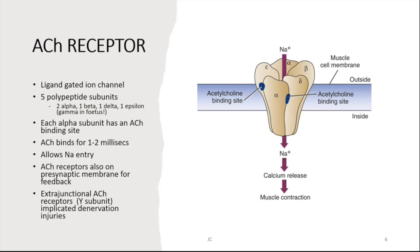Acetylcholine receptors are not just limited to the post-synaptic membrane; they are also present on the pre-synaptic membrane and serve as feedback — high acetylcholine binding there reduces vesicle mobilization and release. There are also extrajunctional acetylcholine receptors, which contain the gamma subunit similar to the fetal receptor. These are implicated in de-innervation injuries: in patients with significant trauma or major burns, these receptors become upregulated, and using depolarizing agents such as suxamethonium can cause significant, sometimes fatal, hyperkalemia.